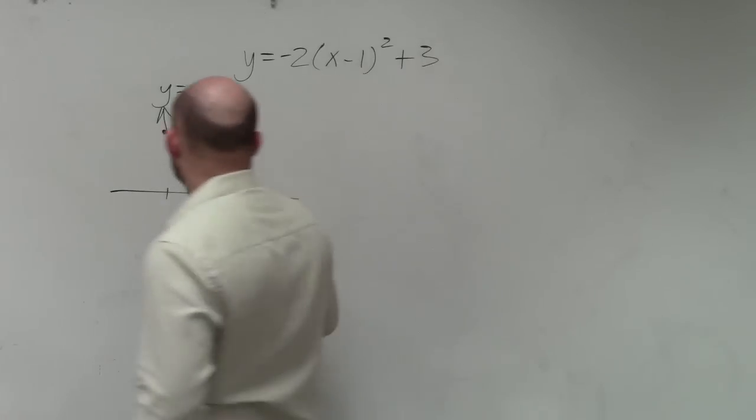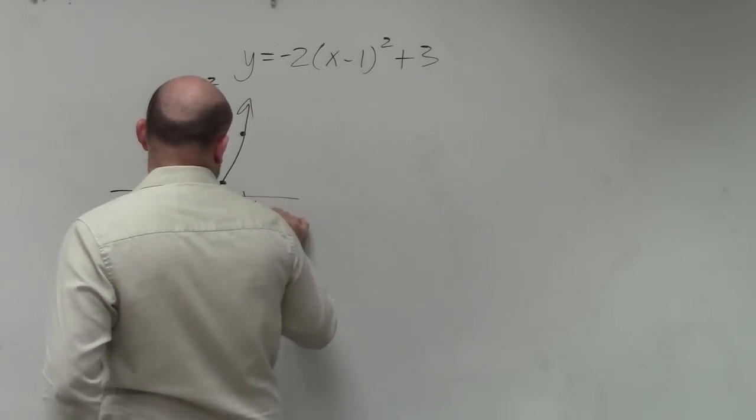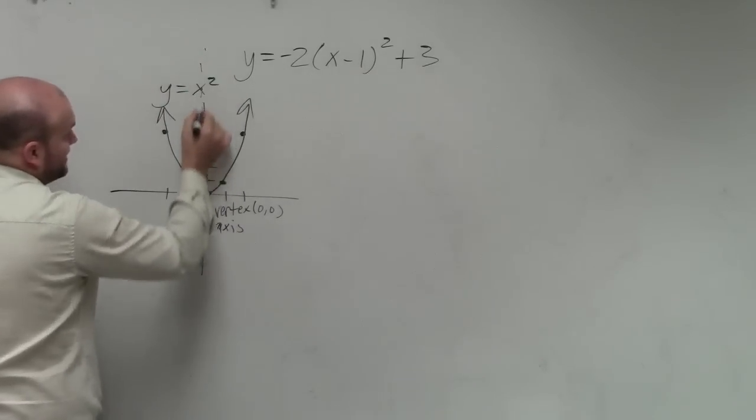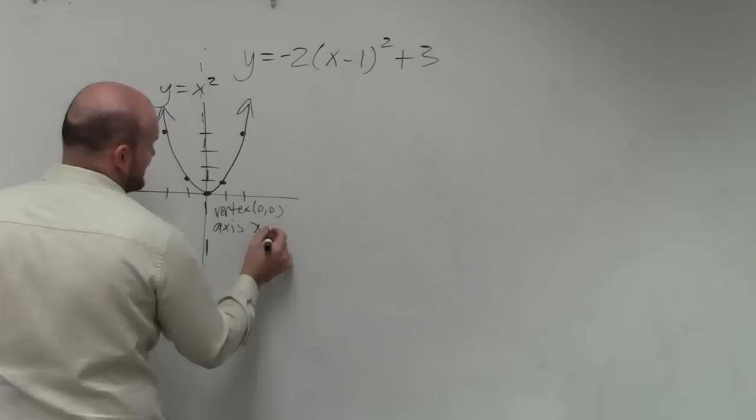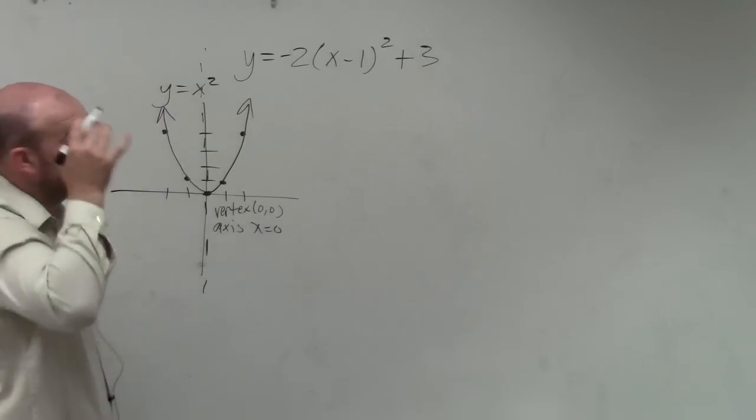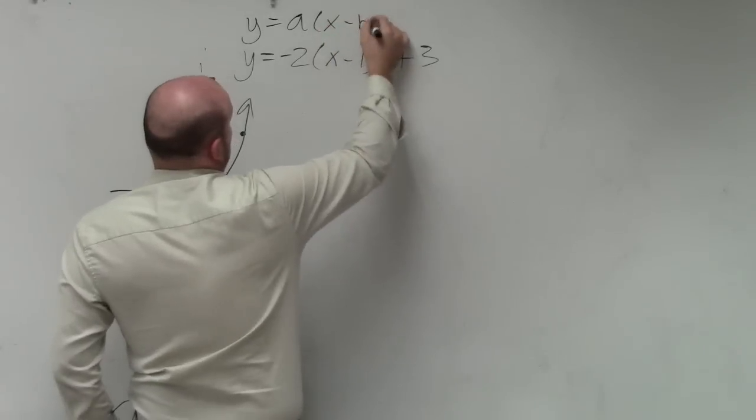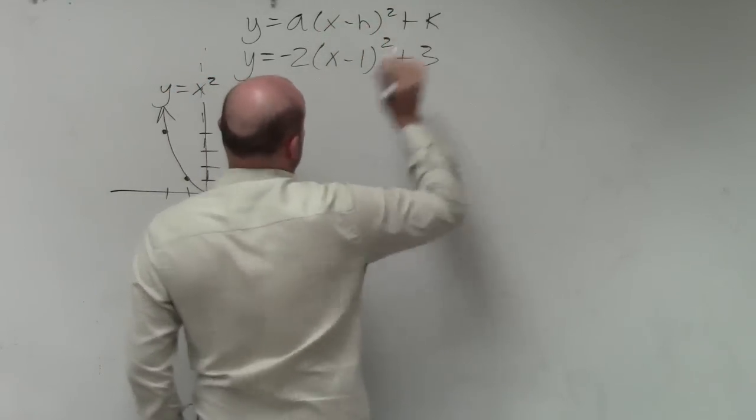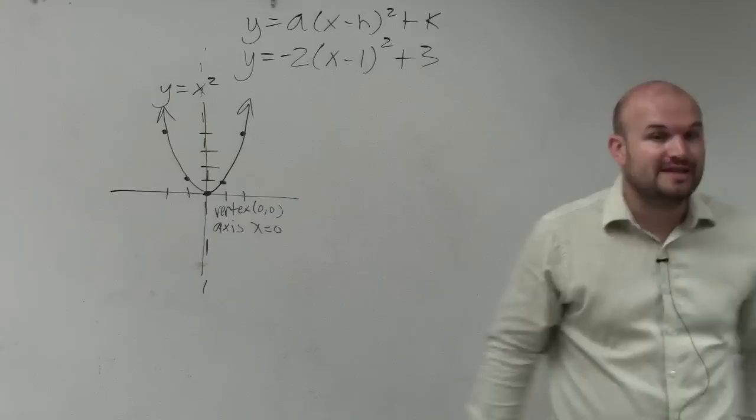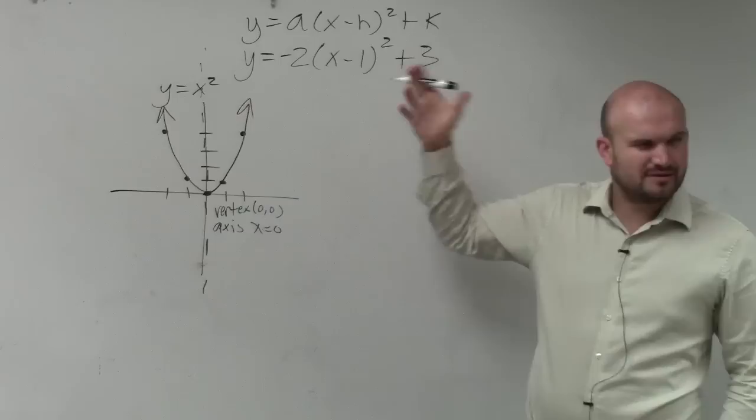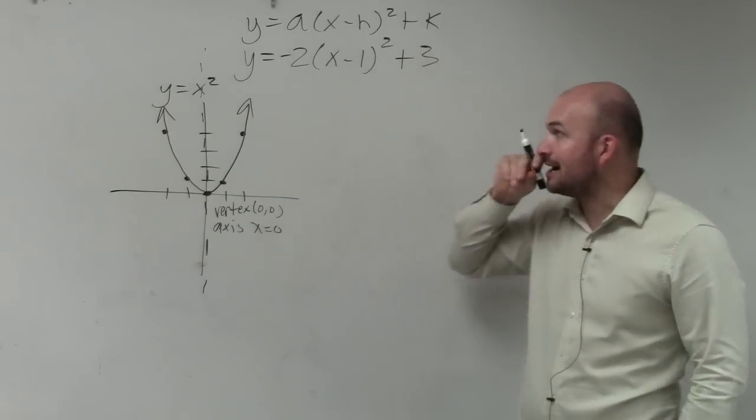The important thing about this is remember the vertex was at 0, 0. And the axis of symmetry, the line that the graph is symmetrical about, was at x equals 0. Then what we did is we learned a new form of an equation, which is called the vertex form. And vertex form had the a, h, and the k. You can see that we have values for each one of those letters. x and y represent any point that's on the graph.